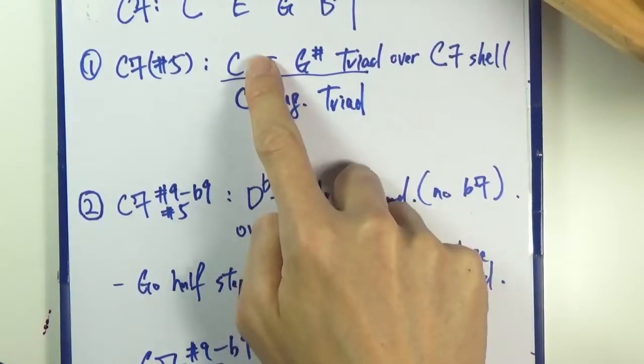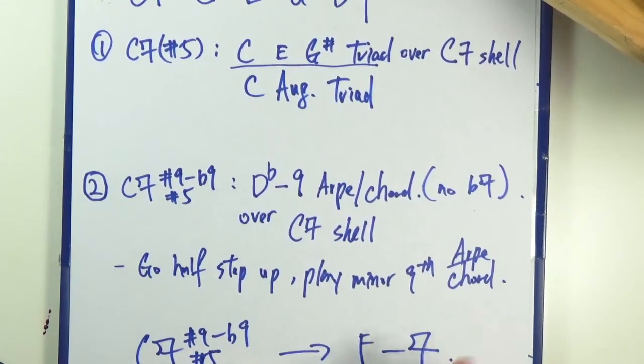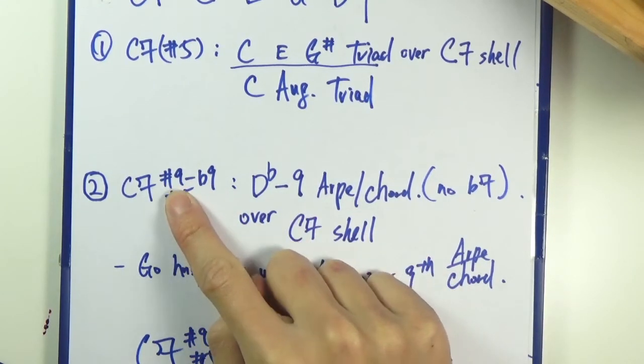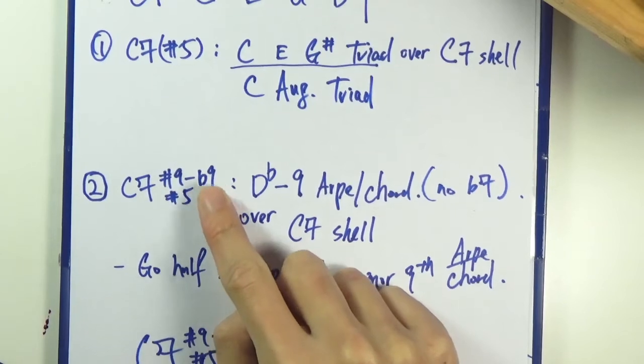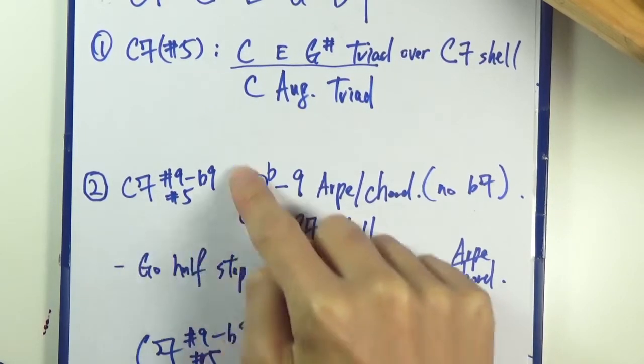Number two, slightly more complicated: you have C7 sharp nine, sharp five first, and then the sharp nine goes to flat nine later on. In order to yield this type of sound, we can actually play the D-flat minor nine arpeggio.